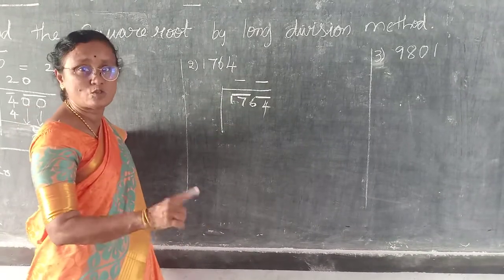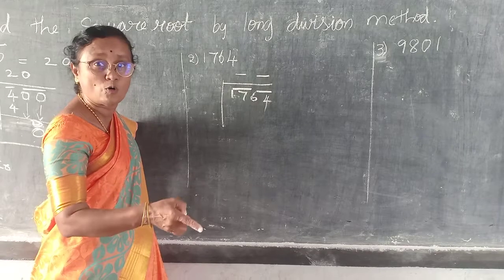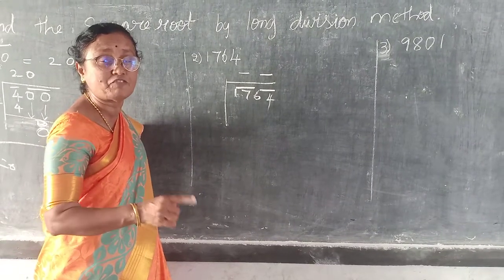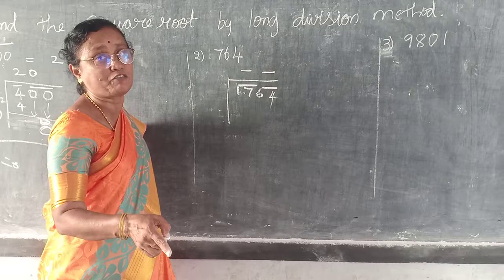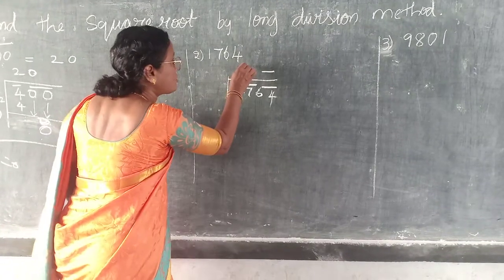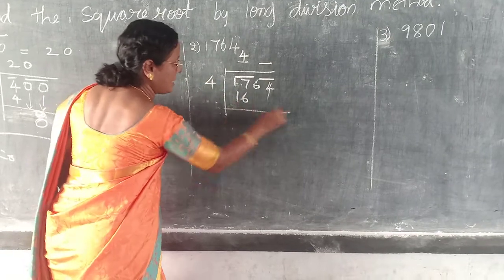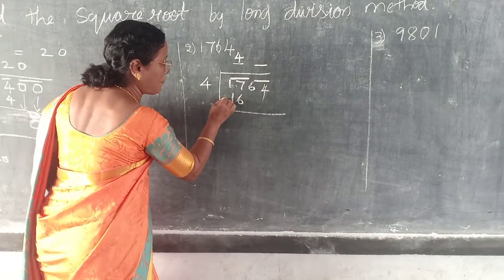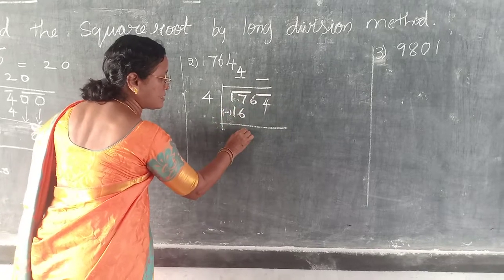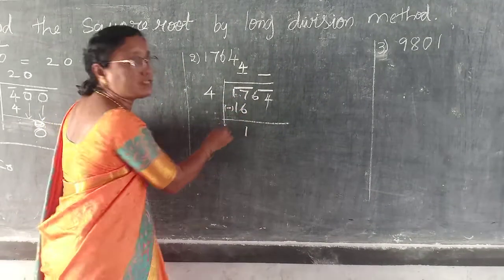Looking at 17: 1 square is 1, 2 square is 4, 3 3's are 9, 4 4's are 16, 5 5's are 25. So which one you have to take? 4 4's are 16. You have to subtract: 17 minus 16 — 7 minus 6 is 1, 1 minus 1 is 0. Remainder is 01.